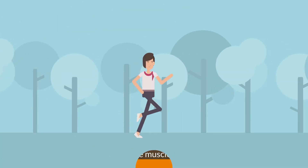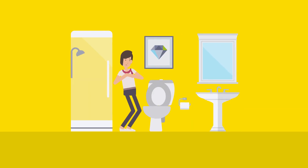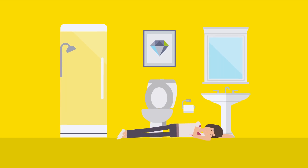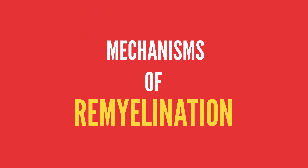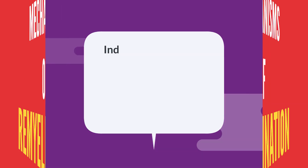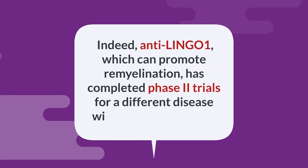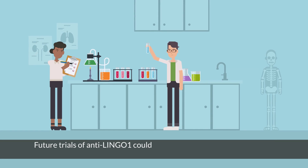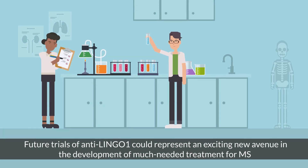In the relapsing phase, recovery can be seen temporarily due to naturally occurring remyelination. Unfortunately, this default response to myelin loss is not able to keep up as the damage becomes more extensive. Elucidating the mechanisms of remyelination would be extremely helpful in the development of new therapies. Anti-Lingo 1, which can promote remyelination, has completed phase 2 trials for a different disease with promising results. Future trials of Anti-Lingo 1 could represent an exciting new avenue in the development of much-needed treatment for MS.